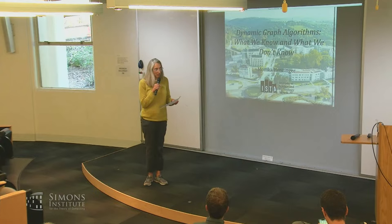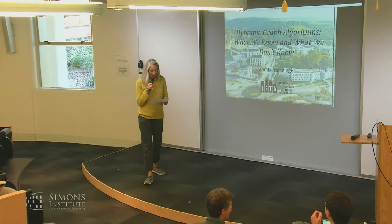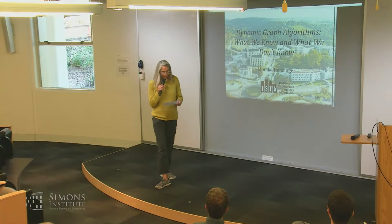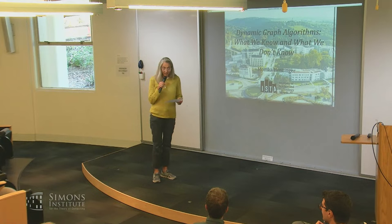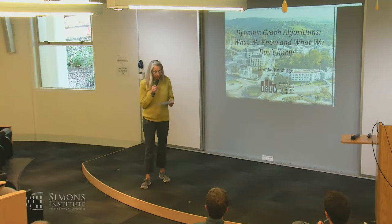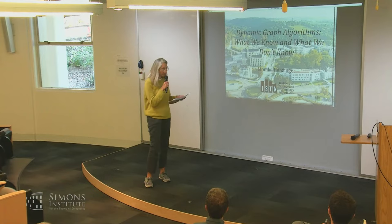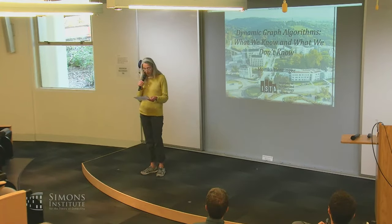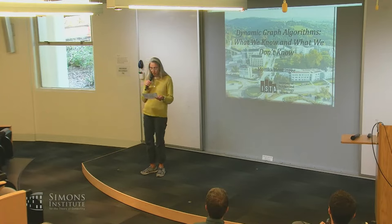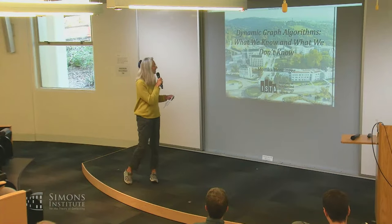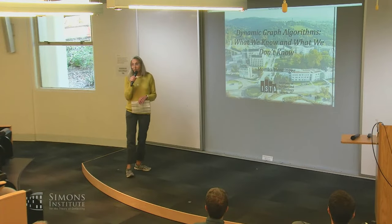I met Monica when she was a graduate student in Princeton, and I was spending part of my postdoc there — that was just a few years ago. She was already a rising star in the field of dynamic graph algorithms and has been a pioneer in that area ever since. She's spent almost a decade as a director of research at Google, and then she's had professorships at EPFL in Switzerland, the University of Vienna, and now the Institute of Science and Technology in Austria. She's received two prestigious advanced grants from the European Research Council, and in 2021 she was awarded the Wittgenstein Prize, the highest scientific award in Austria. She's going to tell us about dynamic graph algorithms — what we know and what we don't know.